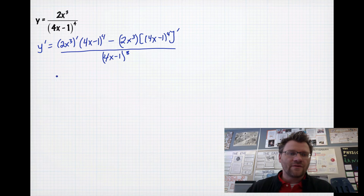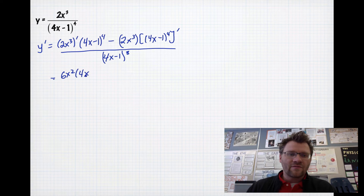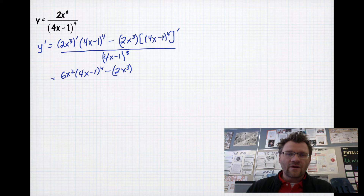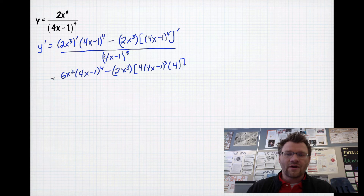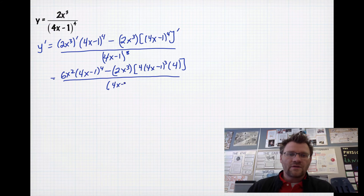Now we can actually take the derivative. The derivative of 2x cubed is 6x squared, multiplied by (4x minus 1) to the fourth power. Then we have 2x cubed multiplied by the derivative of (4x minus 1) to the fourth power, remembering to use the chain rule. That derivative is 4 times (4x minus 1) cubed, multiplied by 4 — the derivative of what's inside the brackets — all over (4x minus 1) to the power of 8.